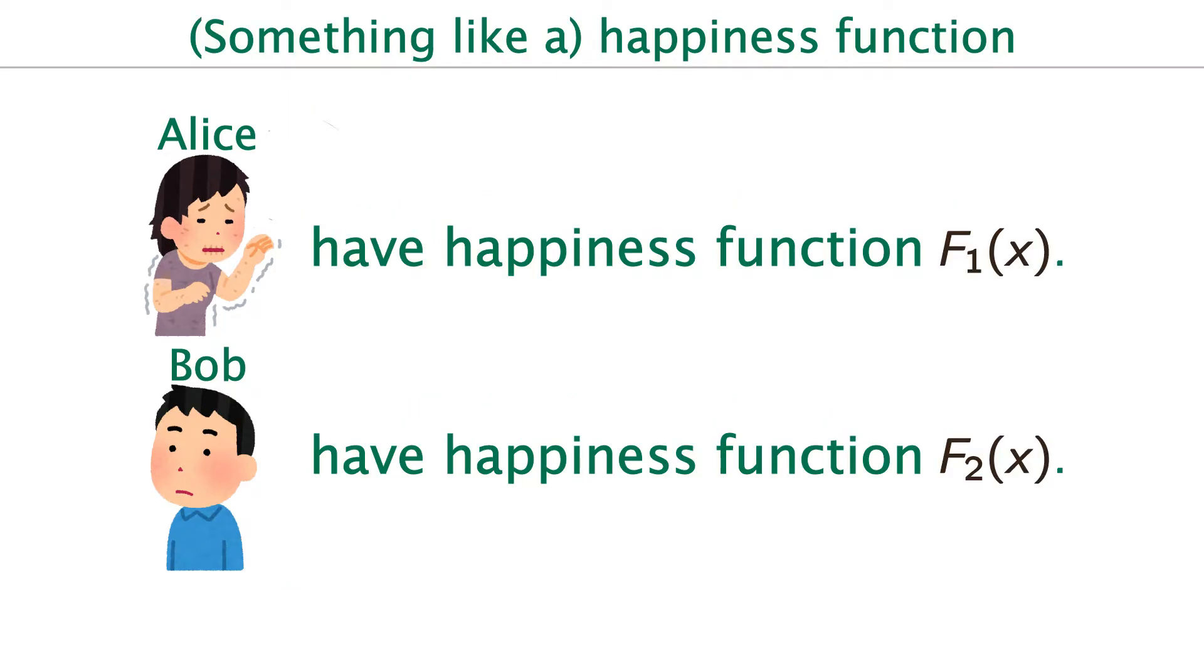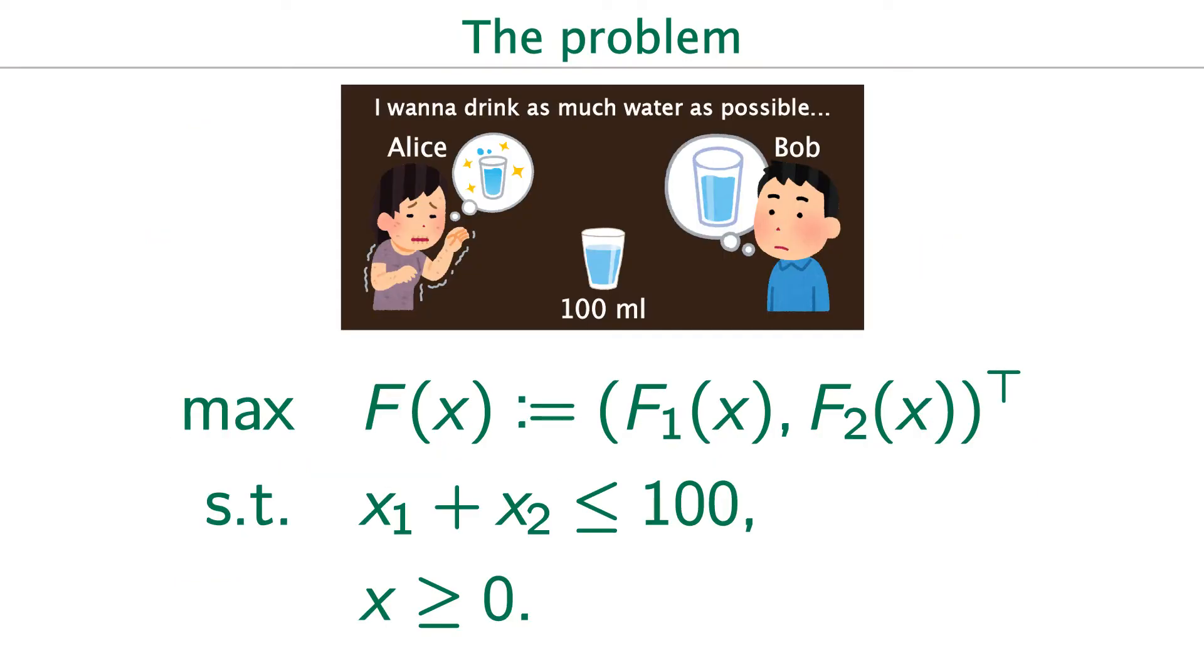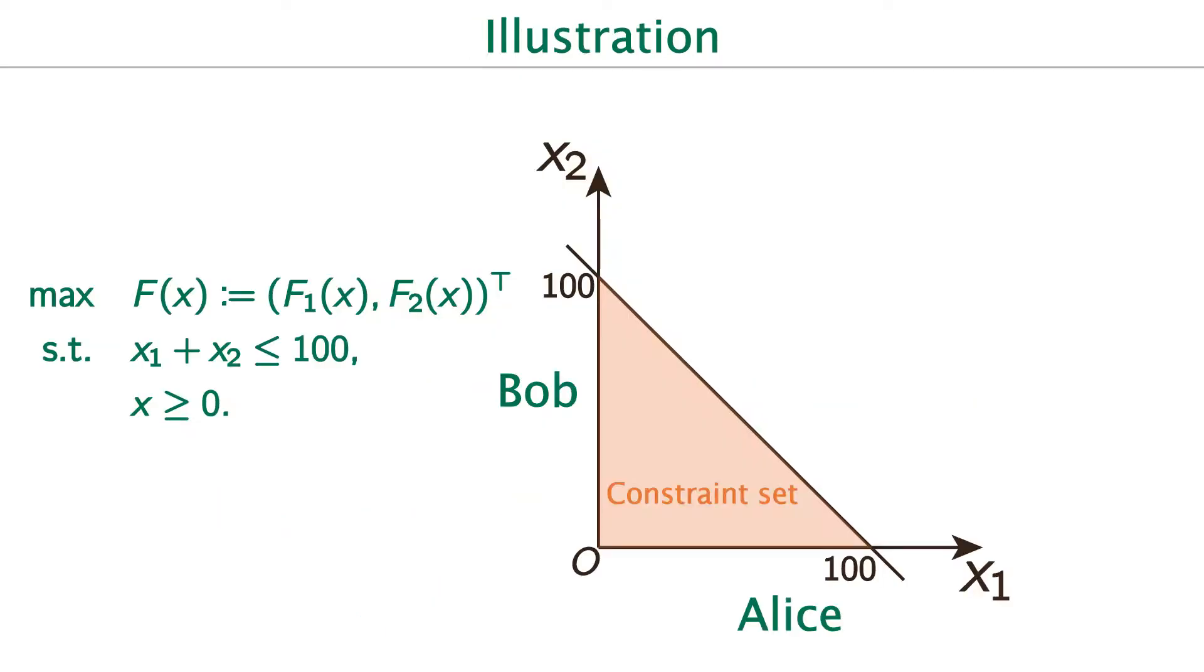Let's define a vector x equals to a pair of x1 and x2. Also, we write something like a happiness function of Alice and Bob by f1 and f2 of x, respectively. Then, we get a multi-objective optimization problem as in the display. The first constraint means there is only 100ml of water, and the second one means they cannot drink negative amount of water.